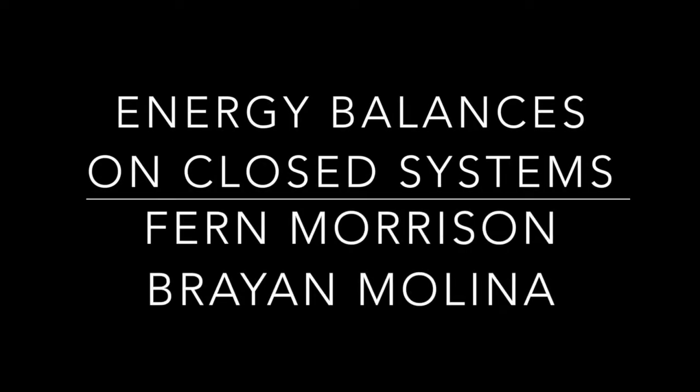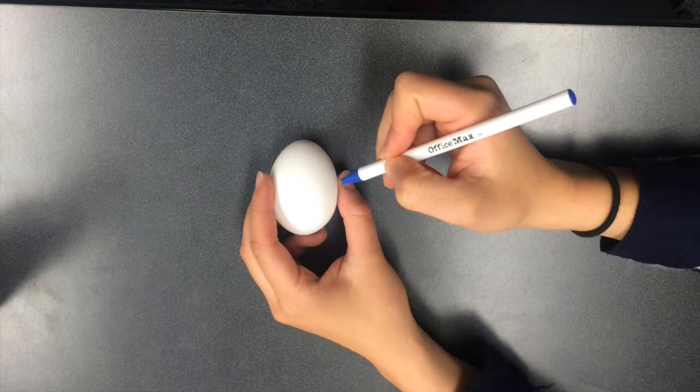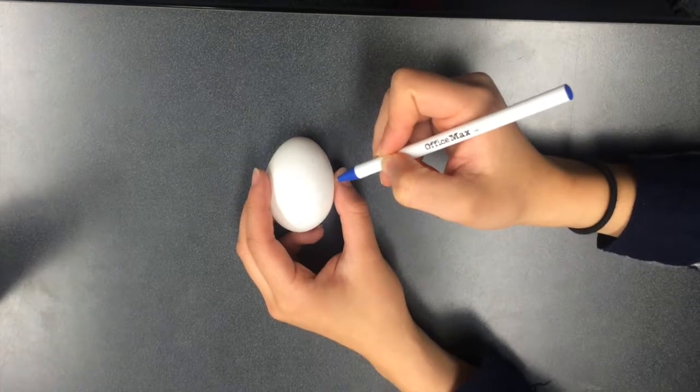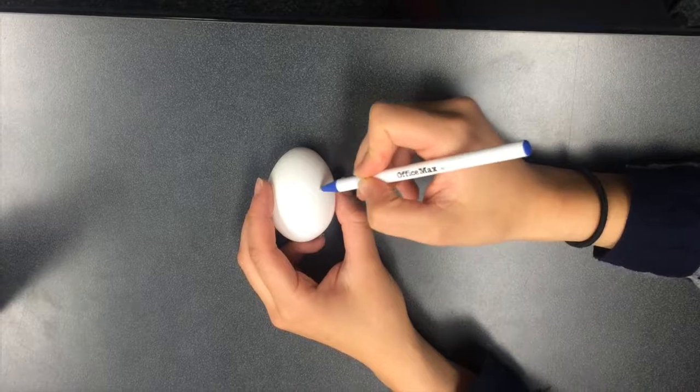In this video, we will look at energy balances on closed systems. The system that we'll use is an egg. As you can see, mass cannot penetrate the eggshell and therefore it's a closed system.